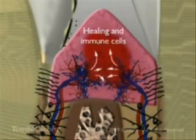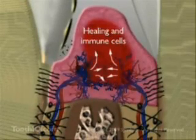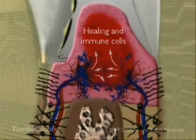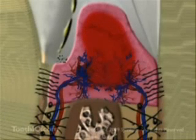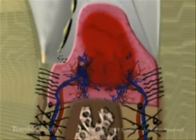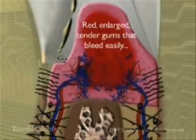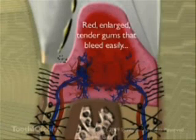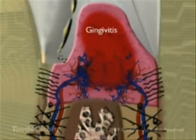In response to the increased bacteria adjacent to the soft gingiva, the body sends immune cells and healing cells to the area by way of the circulation. The increased blood flow to the gingiva produces red, enlarged and tender gum tissues, a reversible condition known as gingivitis, in which the periodontal attachment fibers remain intact.